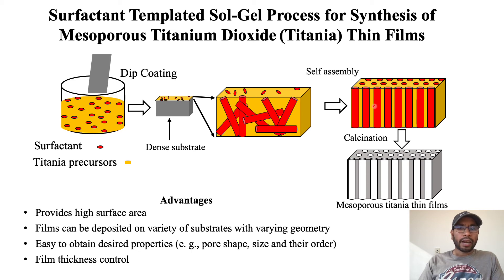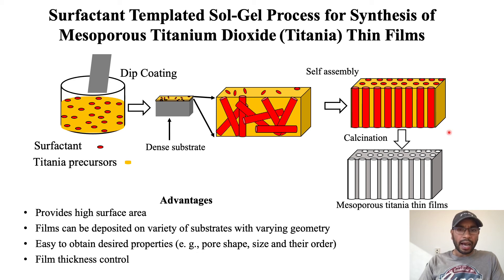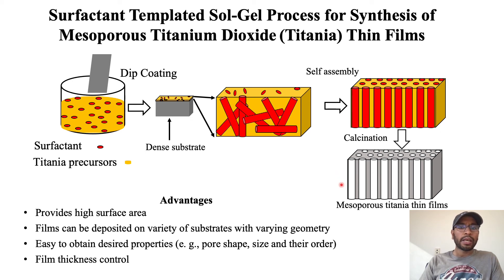Then after self-assembly, the film is annealed at high temperature, such as 400 degrees Celsius, to remove the surfactant, which leaves permanent nanopores in the film.